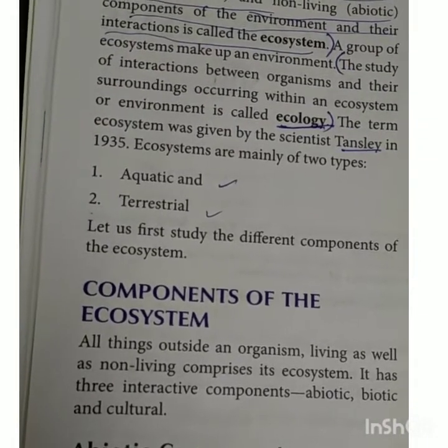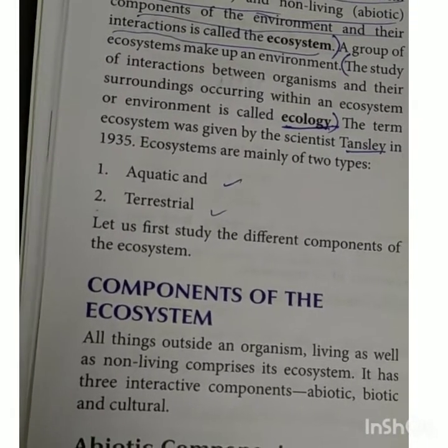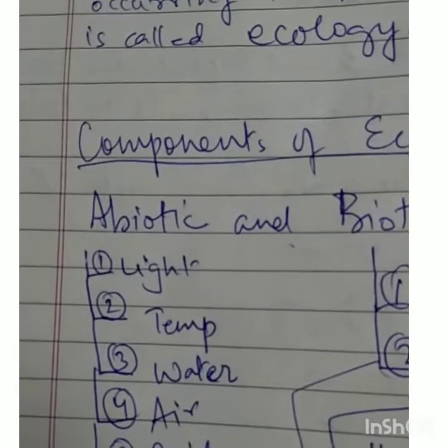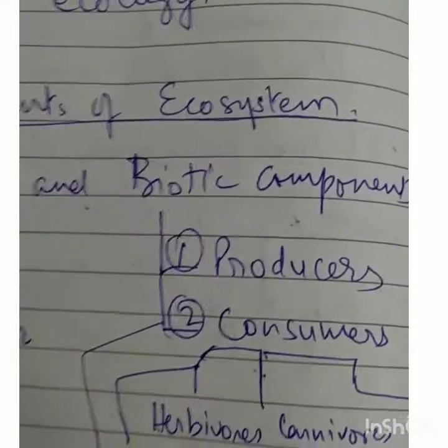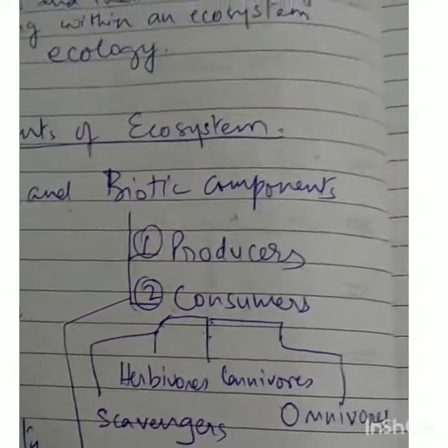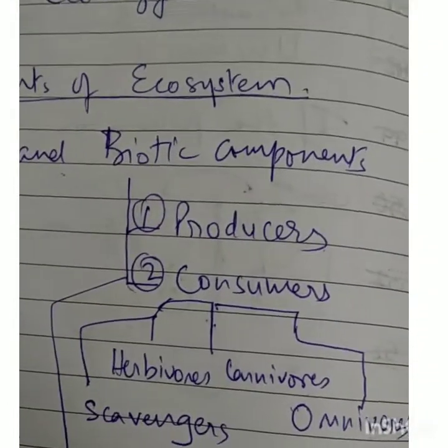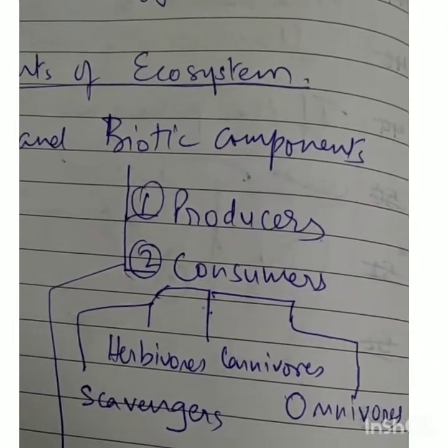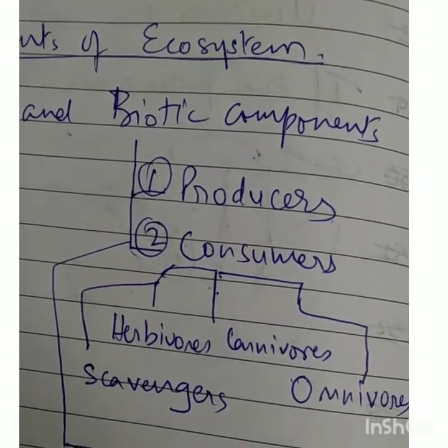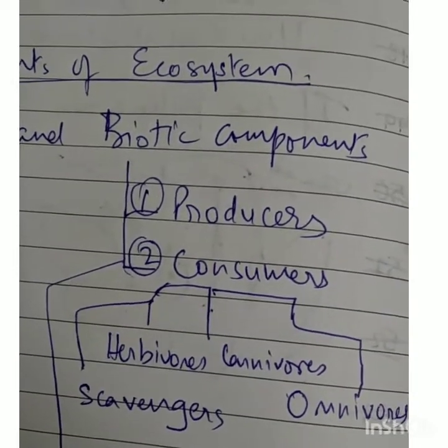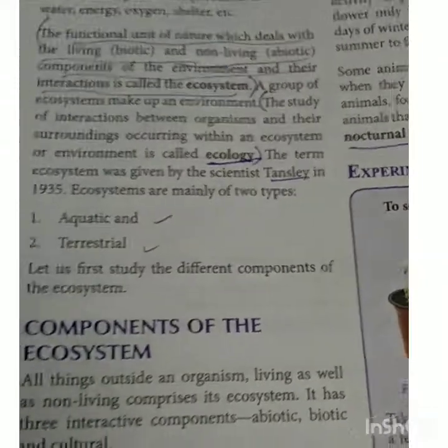There are two main components of the ecosystem: Biotic and Abiotic components. Abiotic components are the non-living components: Light, Temperature, Water, Air, Soil, and Humidity. Biotic components are: Producers, Consumers, and Decomposers. Producers are plants, which provide food. Consumers are different kinds of animals — Herbivorous, Carnivorous, Omnivorous, and Scavengers. The third category is Decomposers, which include fungi and bacteria, which work to break down dead and decayed plant and animal parts and convert them back into nature.